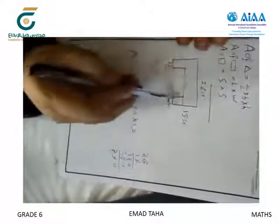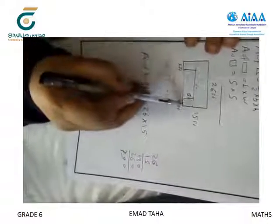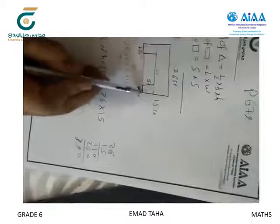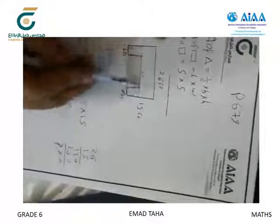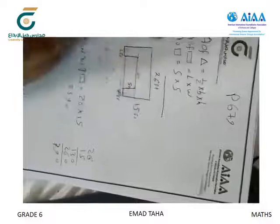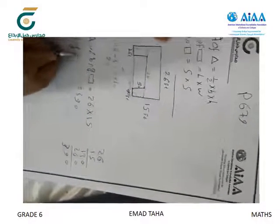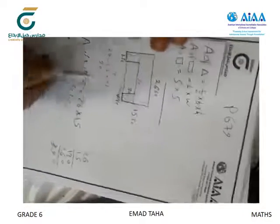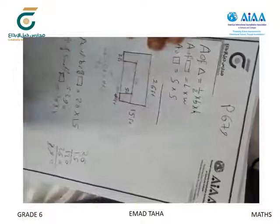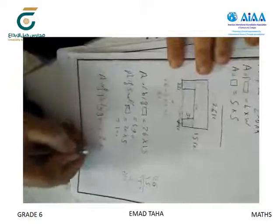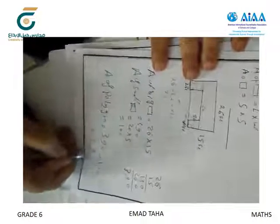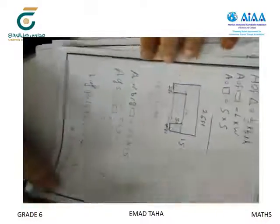Now we find the area of the smallest rectangle. The given sides are 2 and 4, and the total length equals 26. To find the missing side: 26 minus 2 minus 4 equals 20. So this side equals 20, and this one equals 5. The area of the small rectangle equals 20 times 5 equals 100. The area of the polygon equals 390 minus 100 equals 290 square feet.